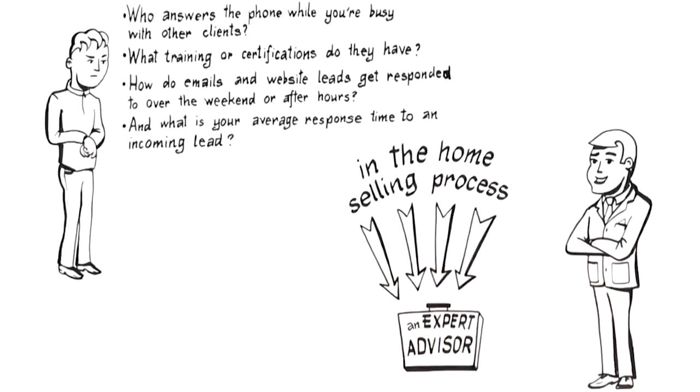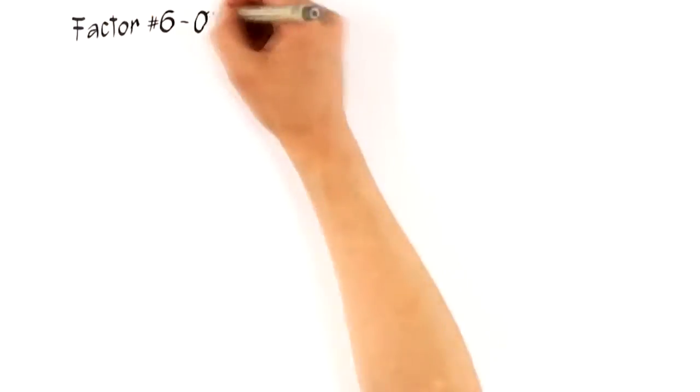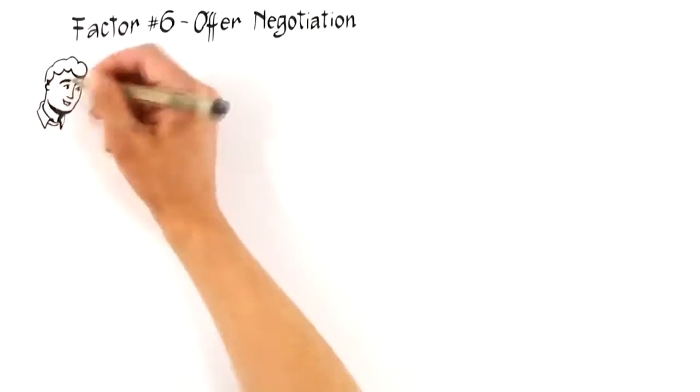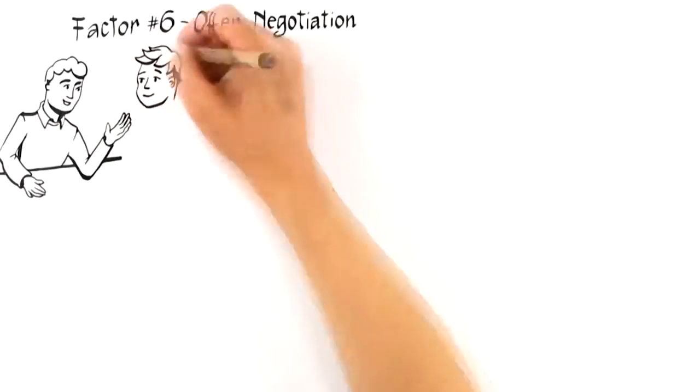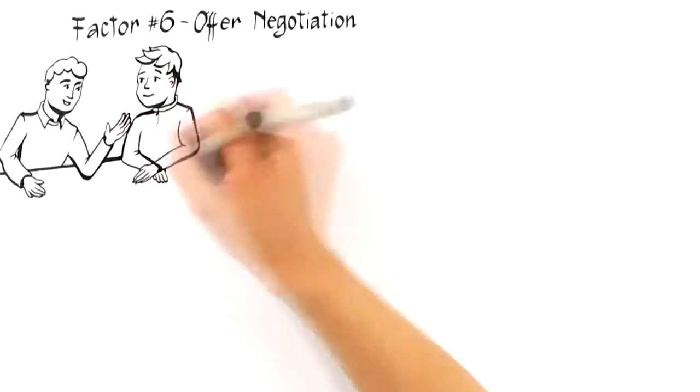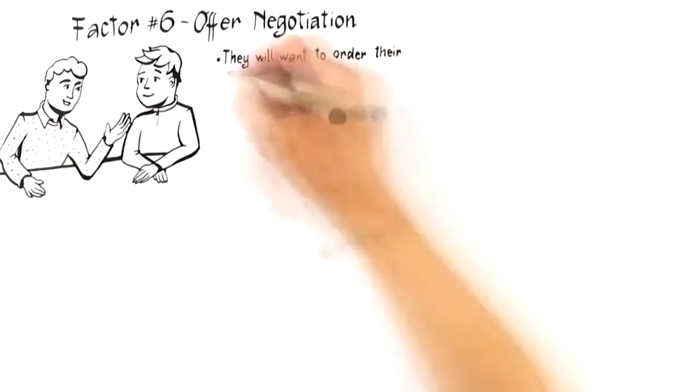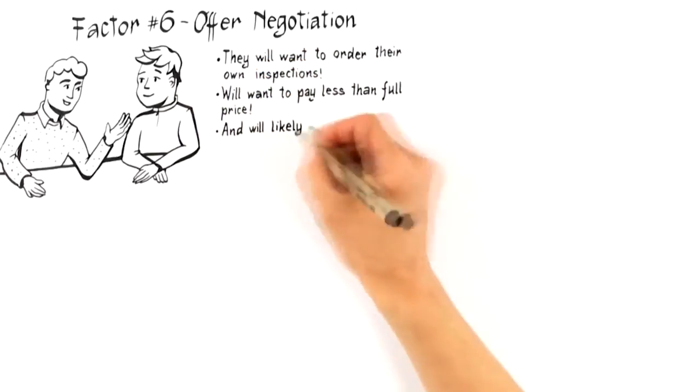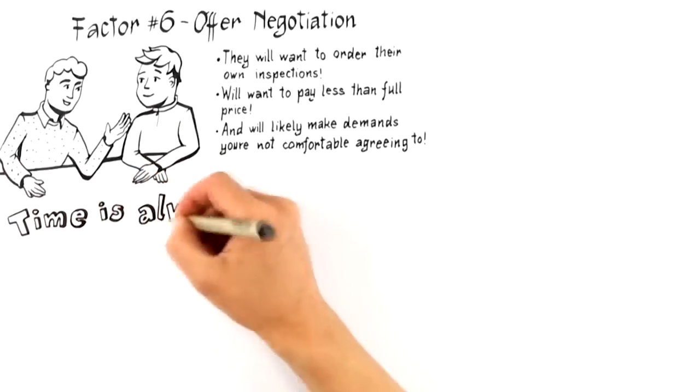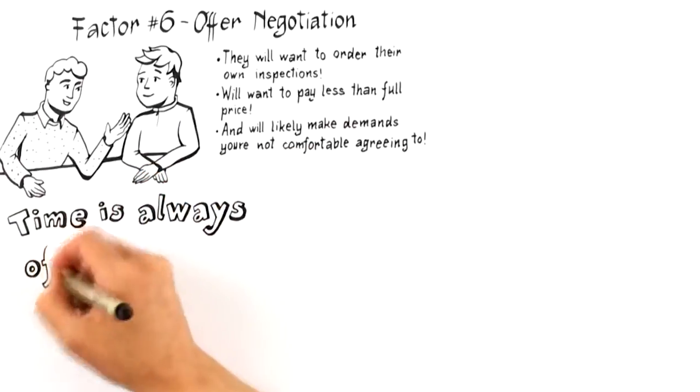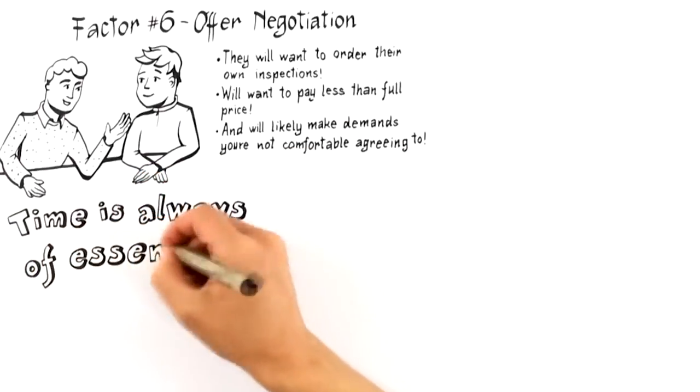Alright, the next to last factor that influences the likelihood you get top dollar for your home is Factor number 6: Offer negotiation. Regardless of how well a home is positioned to attract the perfect buyer, they will want to order their own inspections, will want to pay less than full price, and will likely make demands you're not comfortable agreeing to. Therefore, not enough can be said about hiring an expert who can negotiate an outcome that serves your best interests.